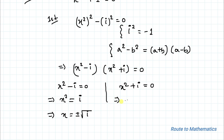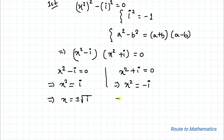And from the second factor, taking plus i to the right-hand side, we have x squared equals minus i, which implies x equals plus or minus root over minus i.